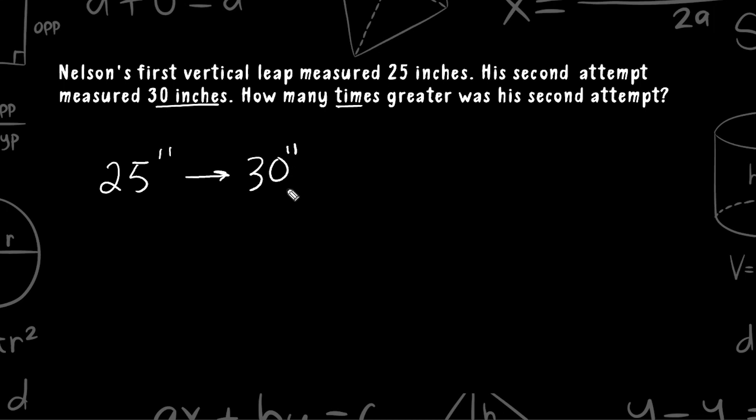Now a common mistake here is that a lot of students would answer 5. But that would not be the answer, because if he was able to jump 5 times greater than his first jump, we would have to multiply 25 by 5, which is 125, which obviously is a lot bigger than 30 inches.